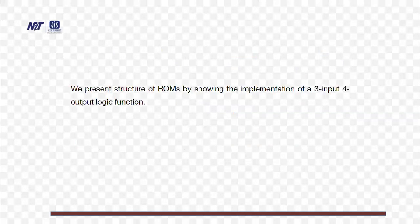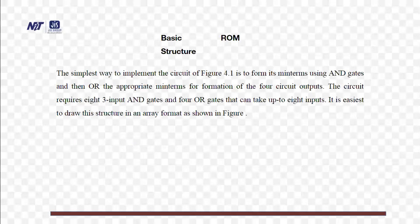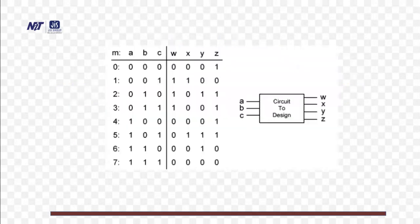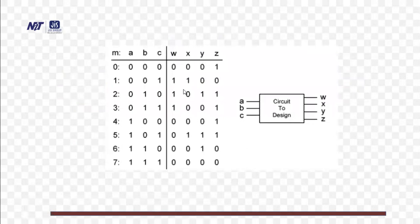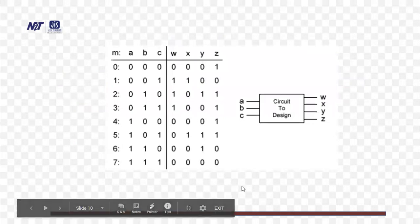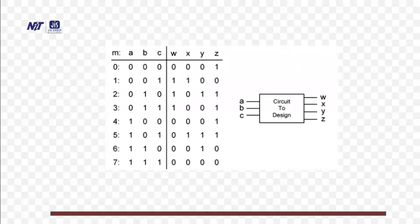Read-only memory. Here we will discuss three input and output logic functions. The simplest way to implement the circuit of any basic ROM structure is shown in the figure — its min terms using AND gates and then ORing the appropriate min terms for forming the fourth circuit output. The circuit requires eight three-input AND gates and four OR gates that can take up to eight inputs. It is easiest to draw this structure in an array format. In the truth table on the left-hand side, min terms are shown, and on the right-hand side, the corresponding outputs. ABC is the input, so corresponding min terms are 0 to 7.